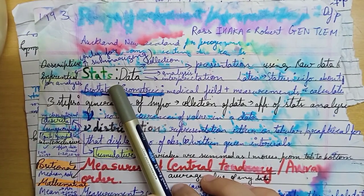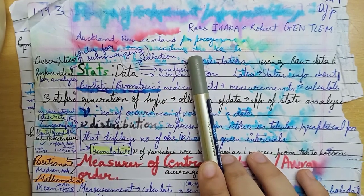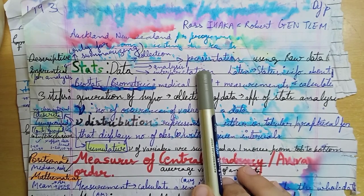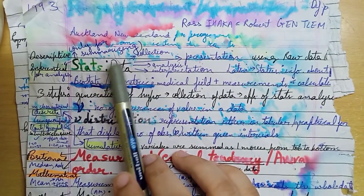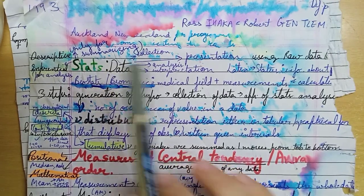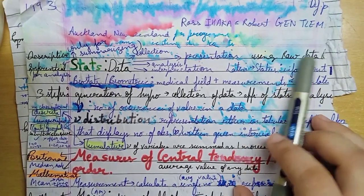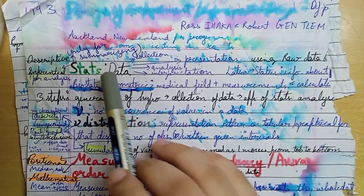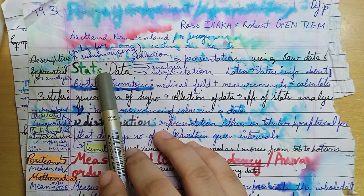Statistics are the collection, presentation, analysis, and interpretation of data, which can be individual frequency distribution and class intervals. This is formed by using raw data, which is the original form. Then statistics are of two types: